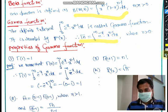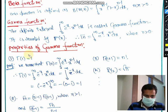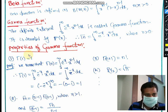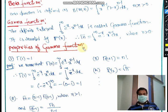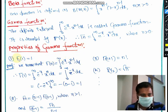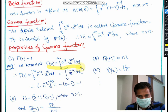We already discussed properties, proofs, and problems for the beta function in the last lecture. Here we will discuss properties of the gamma function, proofs, and the relation between beta and gamma functions. The first property is Γ(1) = 1. We will prove this using the definition: Γ(n) = ∫₀^∞ e^(−x) · x^(n−1) dx.